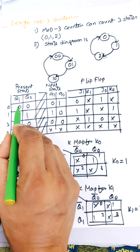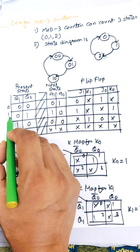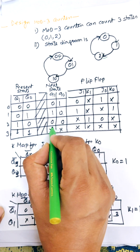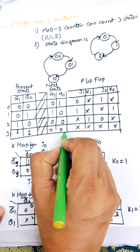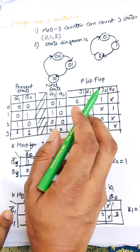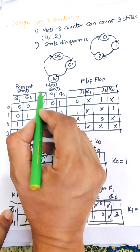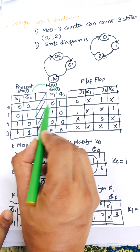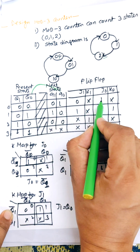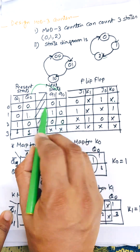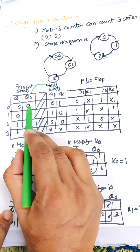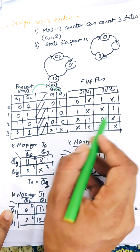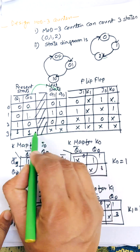As there are two variables, we need to complete entries 0, 1, 2, 3. For state 1,1 there is no next state — that is marked as invalid (don't care). We need to fill in the exact excitation values for JK flip-flops. For Q0: 0 to 1 means J=1, K=cross; 1 to 0 means J=cross, K=1; 0 to 0 means J=0, K=cross; and 1 to 1 cross means cross cross (don't care).